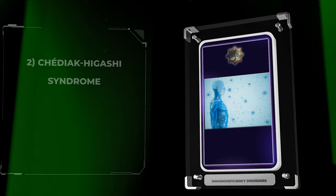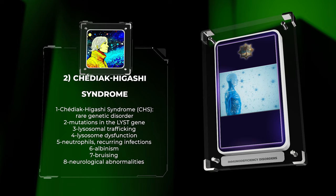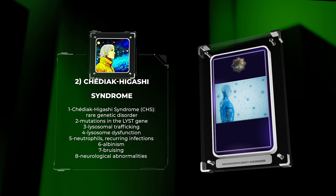Chediak-Higashi syndrome (CHS) is a rare genetic disorder caused by mutations in the LYST gene, which is responsible for lysosomal trafficking within cells. In CHS, lysosome dysfunction affects neutrophils, leading to recurring infections, albinism, bruising, and neurological abnormalities.